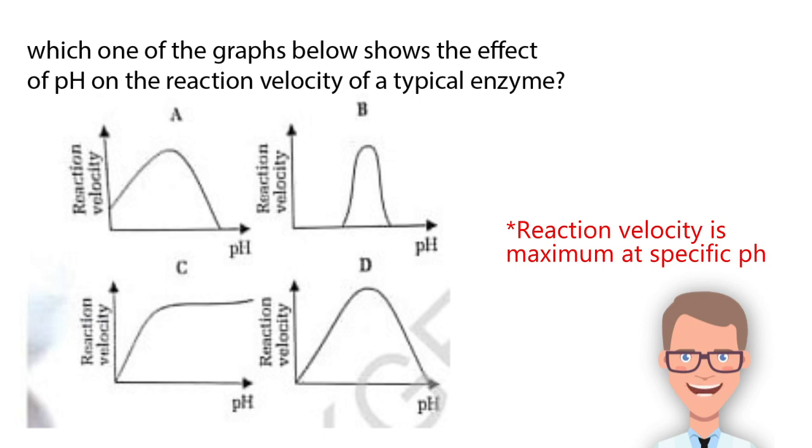For example, if we talk about pepsin, it works best in acidic medium between 1 to 1.4 pH give and take. So our answer should be that any enzyme will have the highest reaction velocity at their specific pH which is in a very narrow range. So the narrowest graph plot is given in diagram B. So our answer is B.